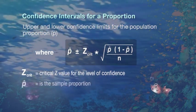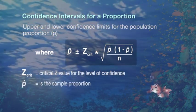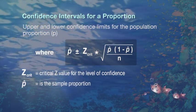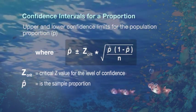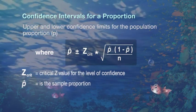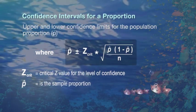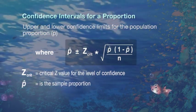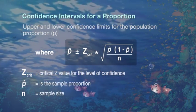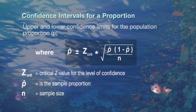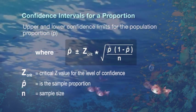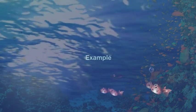P-hat is the sample proportion — in other words, that could be the number of freaky fish in a bucket divided by the total number of all the fish in the bucket. And n is the sample size — that would be like all the fish in the bucket. So let's do an example.